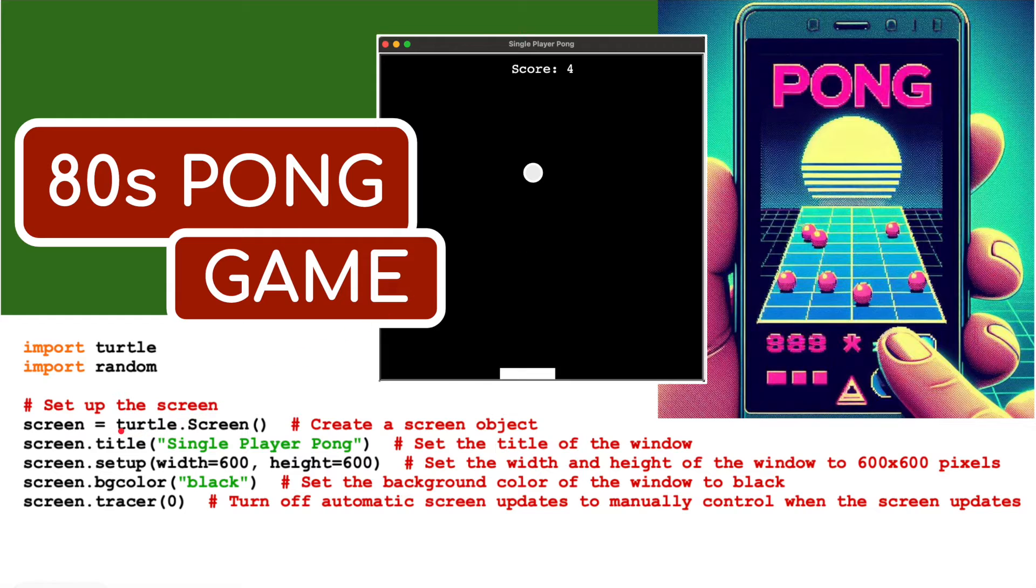The ball and the paddle are really the only two elements that are drawn on the screen. We're going to set up the screen using turtle.Screen() to create a screen object. We're going to set up the title for the window - single player pong - as you can see up here.